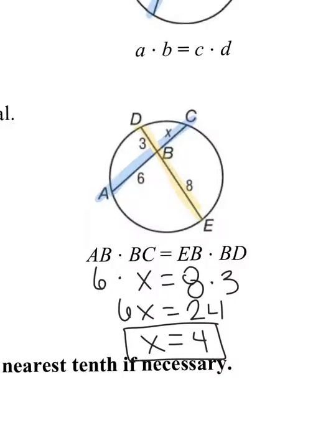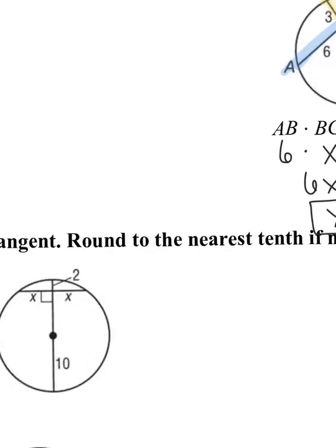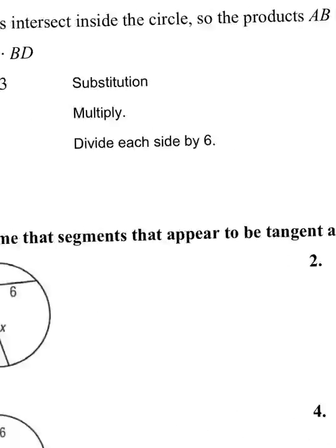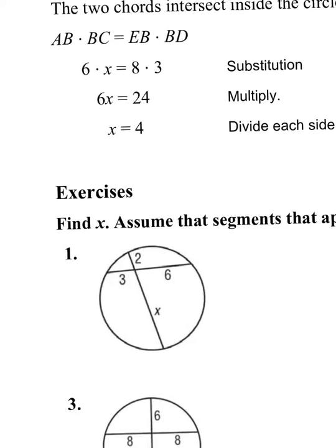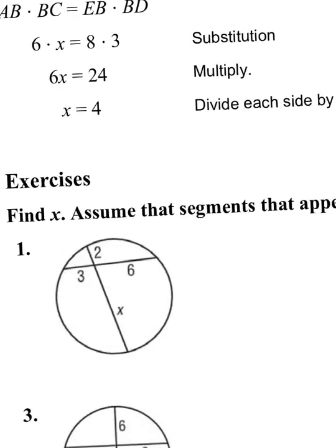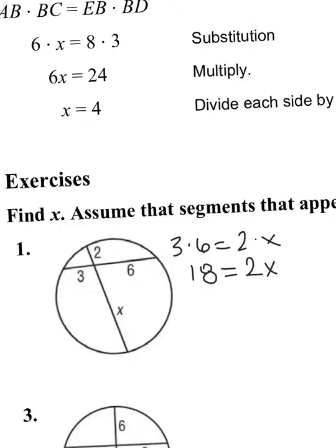Go ahead and move on to question number one. This does say round to the nearest tenth place. On the first one, I'm going to take the line, I'm going to say 3 times 6 equals 2 times X. 18 equals 2X. How do I get X by itself? I divide by 2 on both sides. The answer is going to be 9.